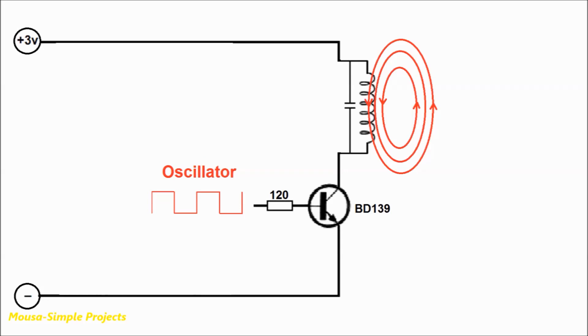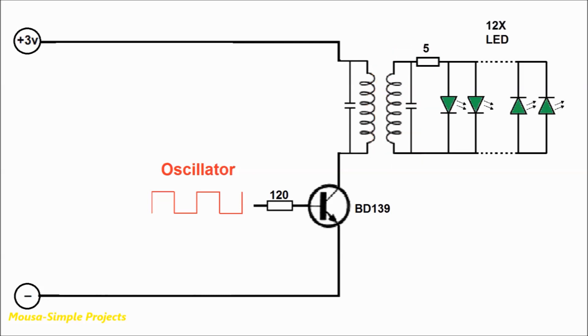This electromagnetic field can be picked up by the receiver coil and converted to usable power, to light up LEDs, run a small fan, charge a small battery, and something like that.